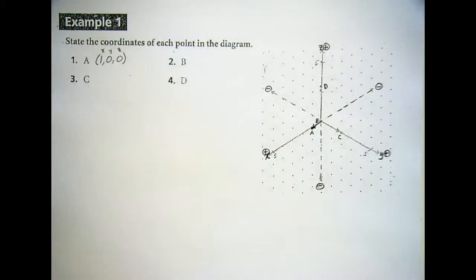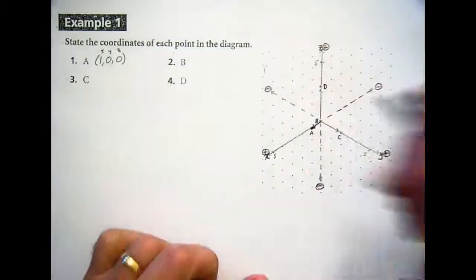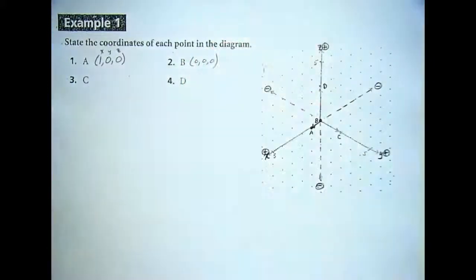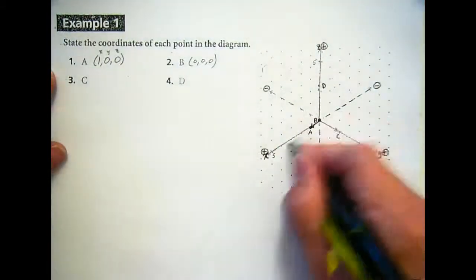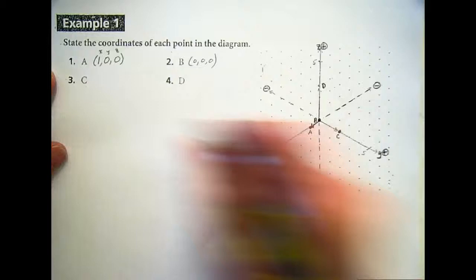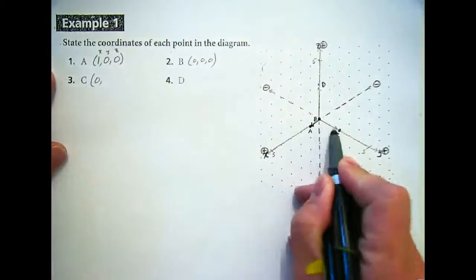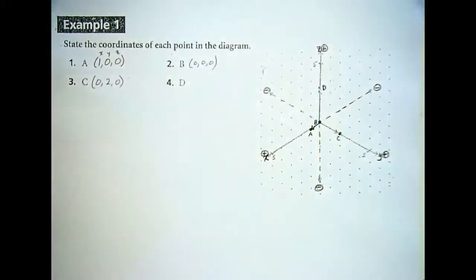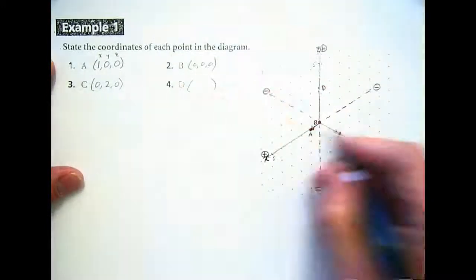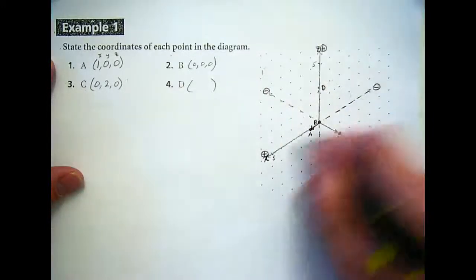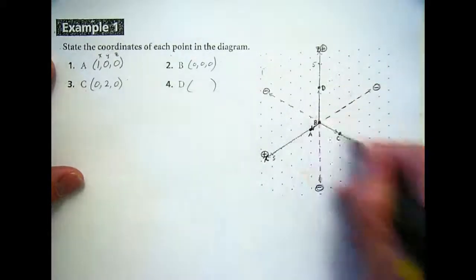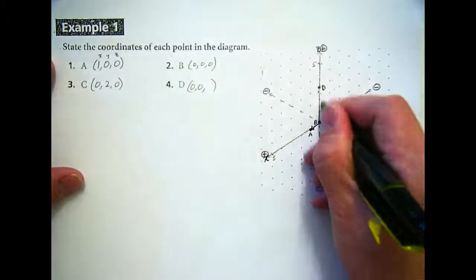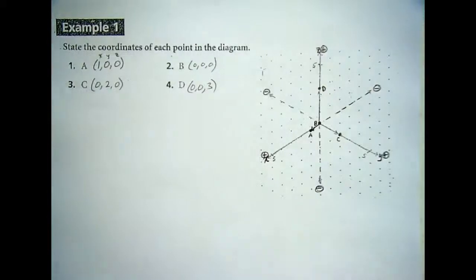Go ahead and complete problems 2, 3, and 4. Letter B is right in the middle — 0, 0, 0. Letter C: we don't go anywhere parallel to the x-axis, so that's 0 for x. On the y, we move 2. On the z, we don't go up or down, so that's 0. Answer: 0, 2, 0. And then for D: we don't go in the x direction, we don't go in the y direction, but we do go up 3 on z. So that's 0, 0, 3.